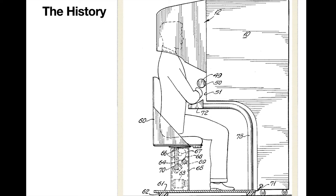Believe it or not, augmented reality isn't new. In fact, it was first invented back in 1957 by a cinematographer named Morton Helig. He developed this contraption called the Sensorama, and it brought sounds, visuals, vibrations, and smells to the viewer.